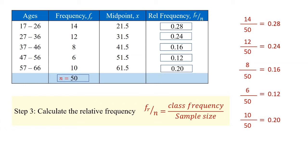Note that the sum of the relative frequency categories — 0.28 plus 0.24 plus 0.16 plus 0.12 plus 0.20 — is equal to 1.0.